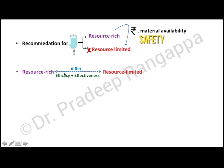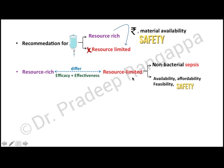The patient cohort in resource-rich settings significantly differs from those in resource-limited countries, and we do not know for sure how applicable those guidelines are to our settings. In resource-limited countries like ours, we deal with a lot of non-bacterial sepsis — tropical infections like dengue, leptospira, scrub typhus, and rickettsial infections. Most literature from the western world on fluid resuscitation does not account for these disease conditions, and we must also consider affordability and feasibility of tools.